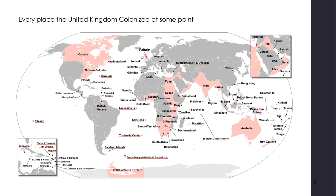This is a map looking at every place the United Kingdom colonized at some point. And it's a decent portion of the globe. There was a saying when Britain was at its height of colonization that the sun never set on the United Kingdom.